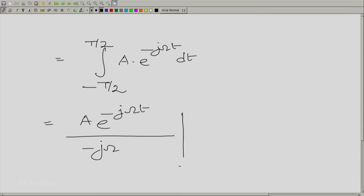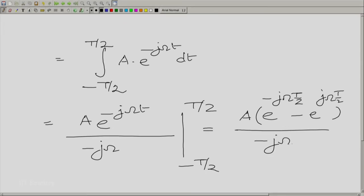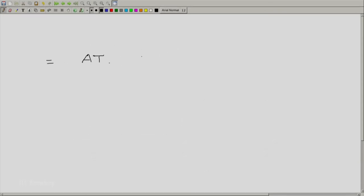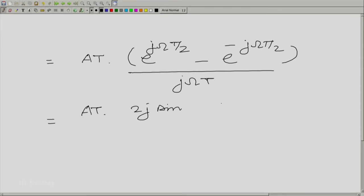And that is essentially integral from minus capital T by 2 to plus T by 2, a e raised to the power minus j omega t dt. So you have a e raised to the power minus j omega t divided by minus j omega, and then we could multiply and divide by T by 2. Let us simplify this.